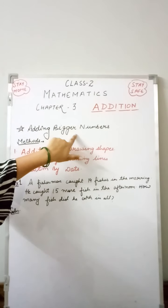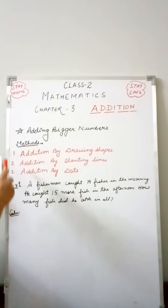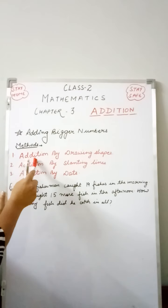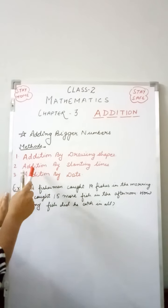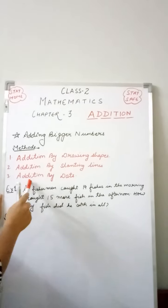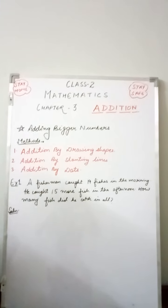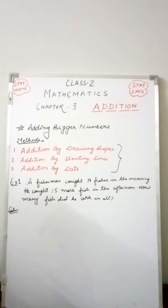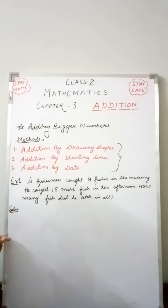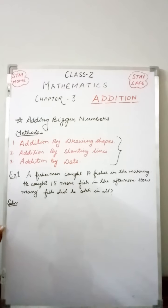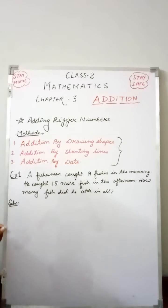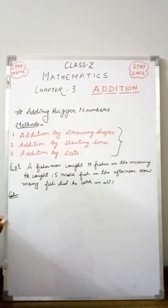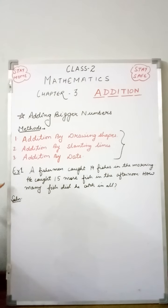Now, adding bigger numbers is the first topic of this chapter. There are three methods of adding bigger numbers: addition by drawing shapes, addition by slanting lines, and addition by dots. These three methods can be used as in previous classes like KG or Class 1 — this is just a recapitulation. I want to clarify these topics with the help of examples.